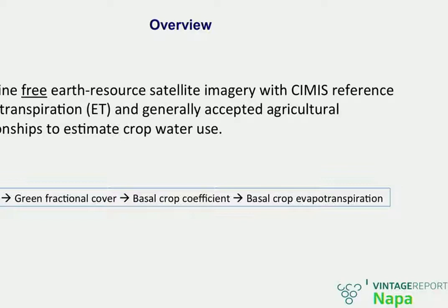What I'm going to talk about today is a proof-of-concept system we've built as a result of grant-funded research funded federally by the NASA Applied Sciences Program, as well as by various DWR and other state agencies. The idea has been to combine free earth resource satellite imagery with CIMIS reference evapotranspiration, combining that with generally accepted agricultural relationships regarding crop water use estimation — for instance, the FAO 56 crop water requirement guidelines and various other equations the agricultural engineering community has published over the last couple of decades.